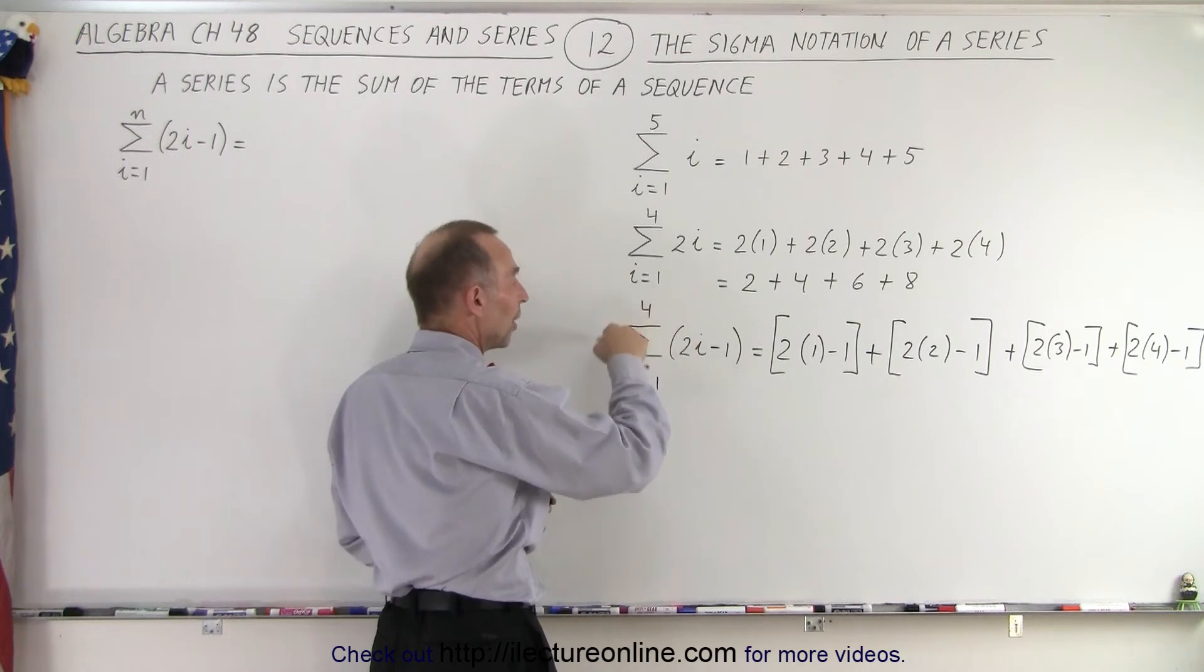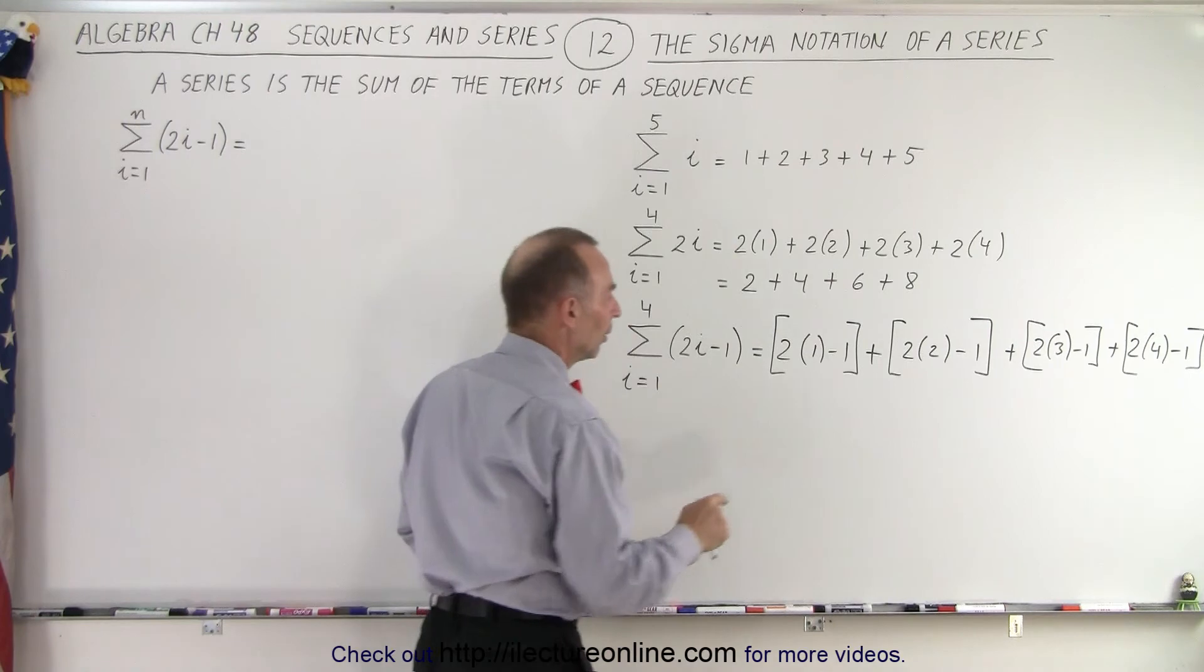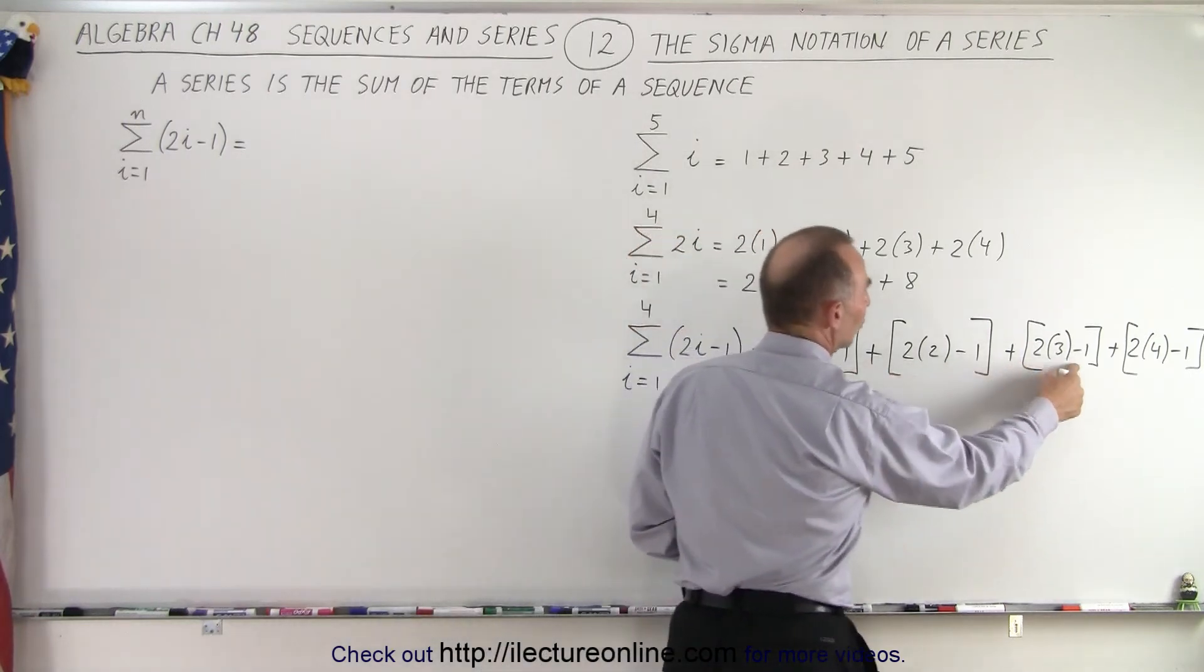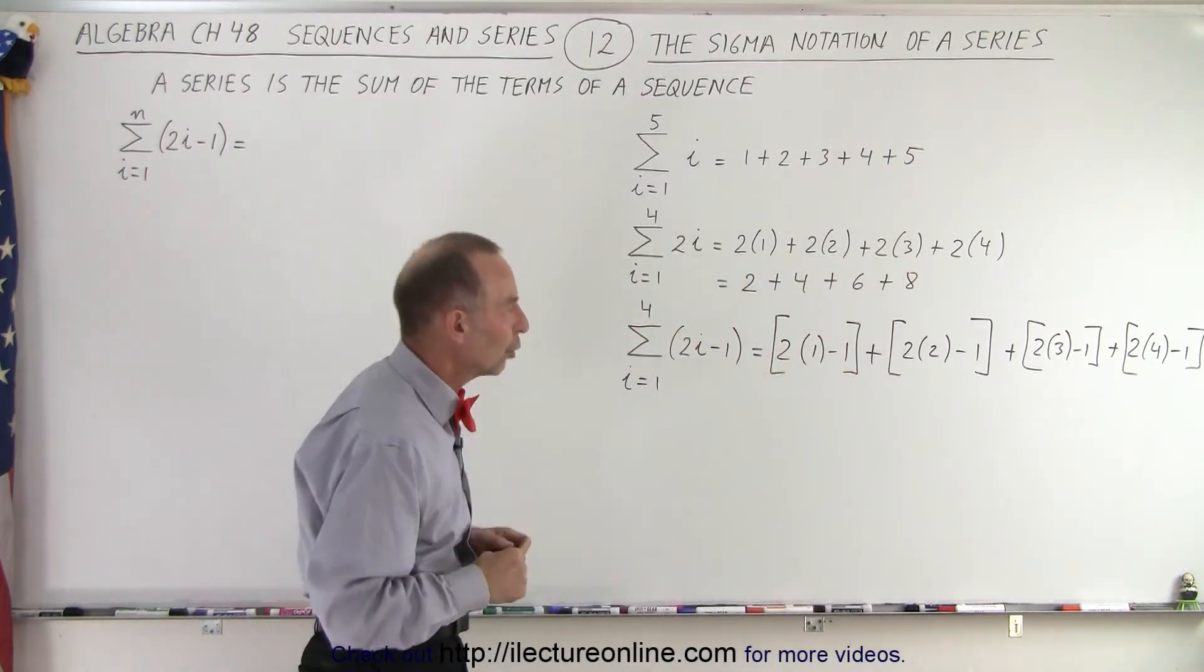This means we sum them all up and this is what we're summing 2 times i as i goes from 1 to 4 minus 1. So 2 times 1 minus 1, 2 times 2 minus 1, 2 times 3 minus 1, 2 times 4 minus 1 and that is what we mean by that sigma notation.